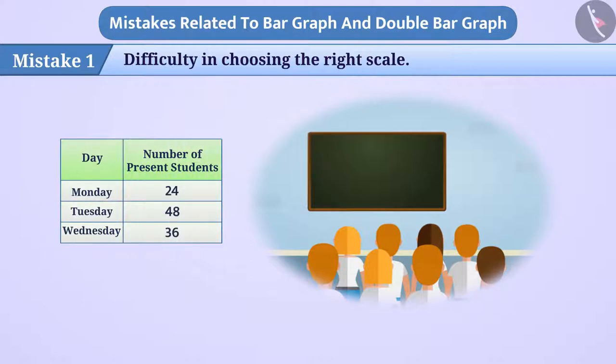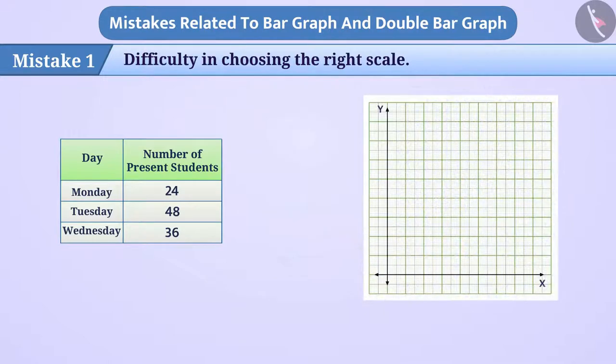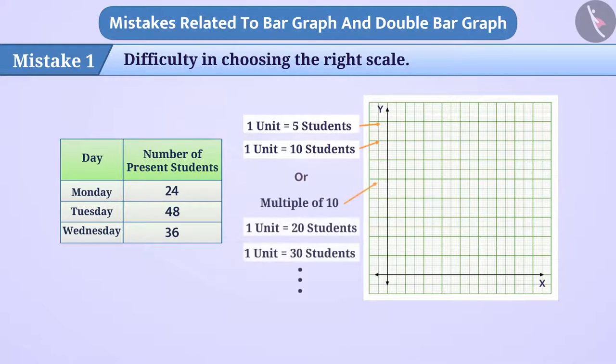Children often think that it becomes easier to draw a bar graph if the scale is considered as multiple of 5, 10, and multiple of 10. But this is a misconception.